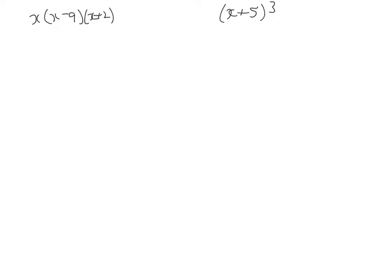So over here, let's have a look at how we do this. We multiply these two out. x times x gives us x squared. x times 2 gives us plus 2x. Negative 9 times x minus 9x. Negative 9 times 2 gives us negative 18.